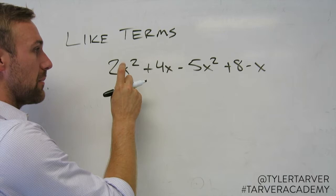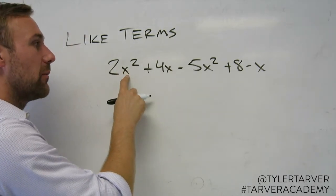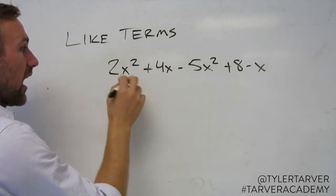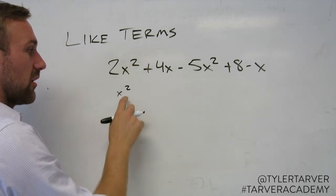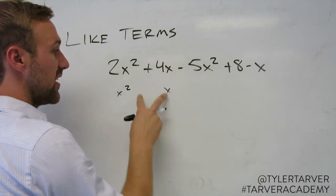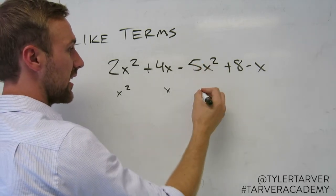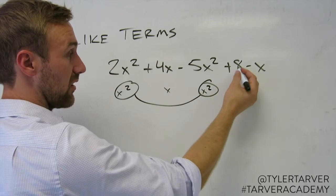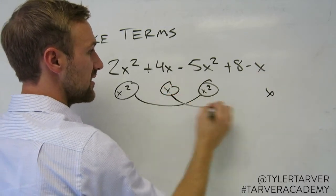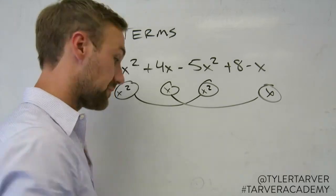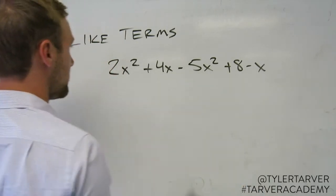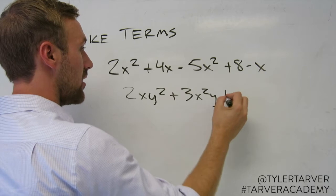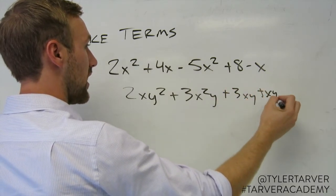Let's start with like terms. Like terms means that they have the same variable and that variable has the same exponent. So right here, this is x². I don't care about the number, I care about the variable and its exponent. X². That one only has an x - these are not like terms. This one has an x² - these two are like terms. This one doesn't have an x, so it's just a regular number. And this has an x - these are like terms.